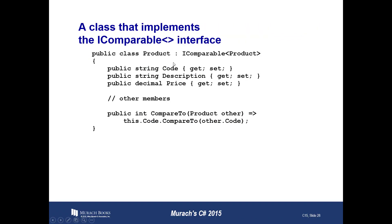We're up to how to implement the I-Comparable interface. Because I-Comparable is a generic interface, you can use angle brackets after the I-Comparable interface to identify the type of objects that are being compared — in this case, product objects. To implement the I-Comparable interface, you must implement the CompareTo method.